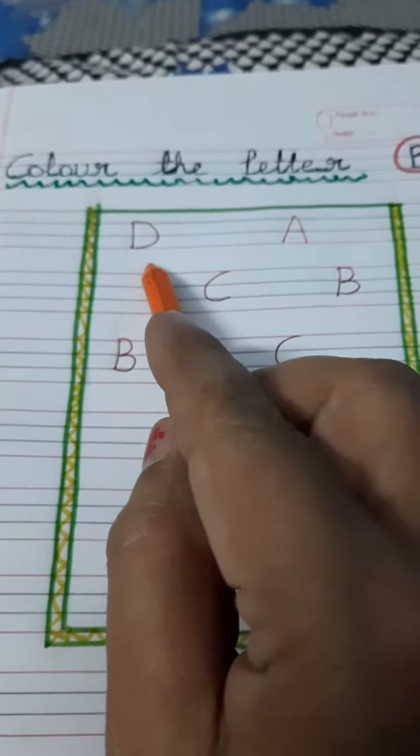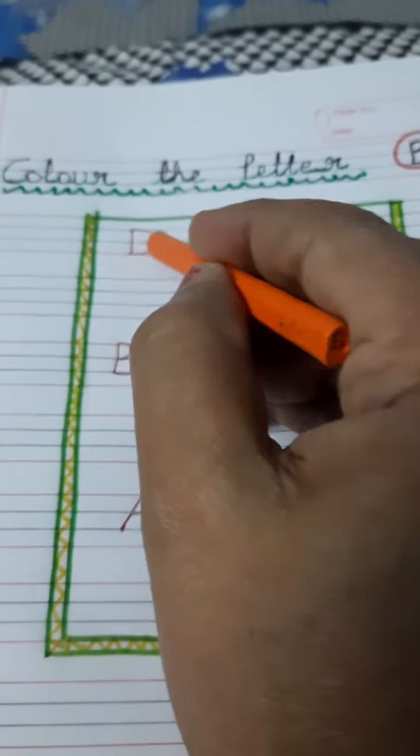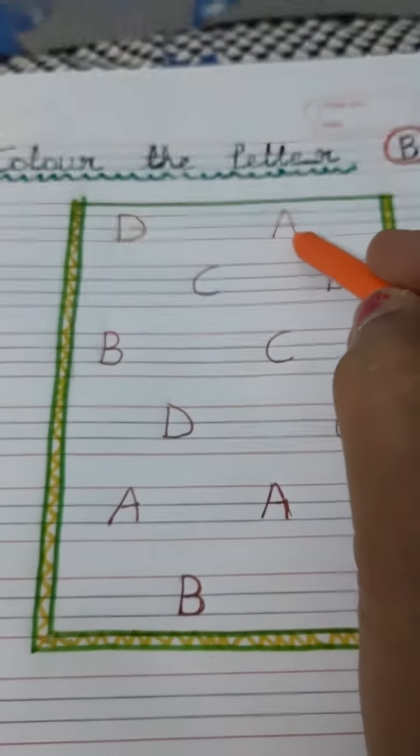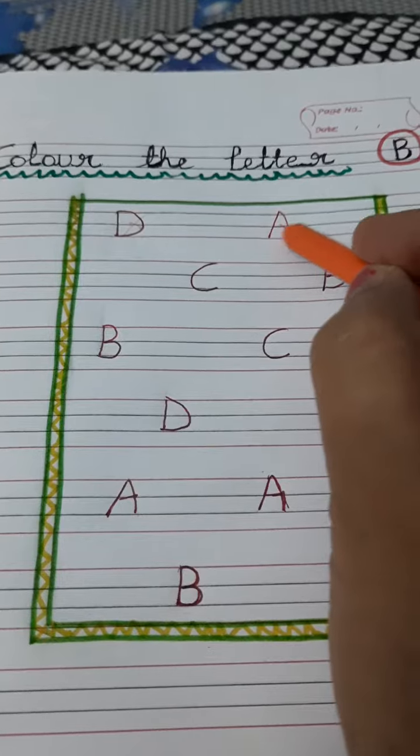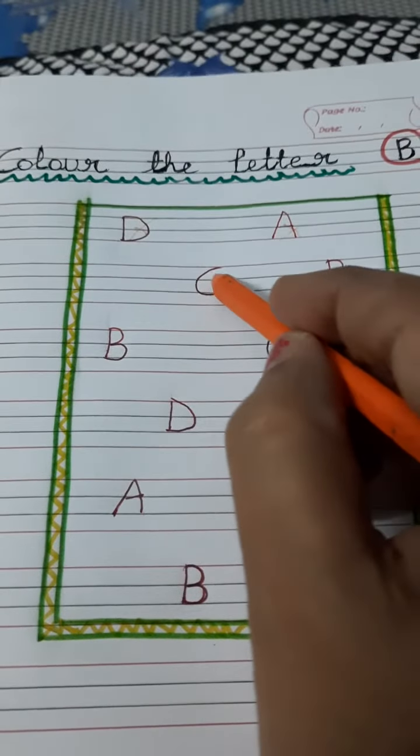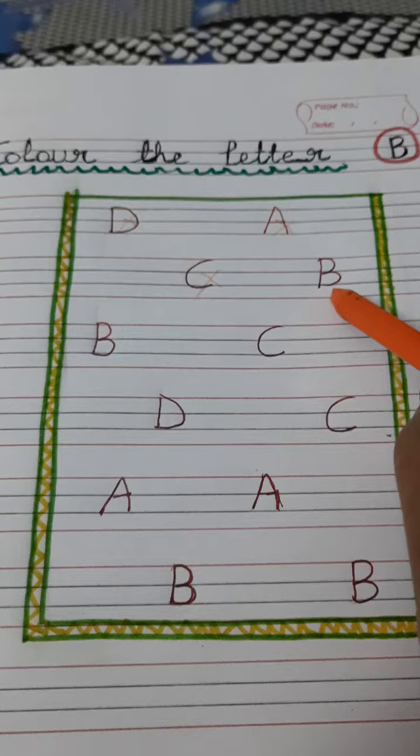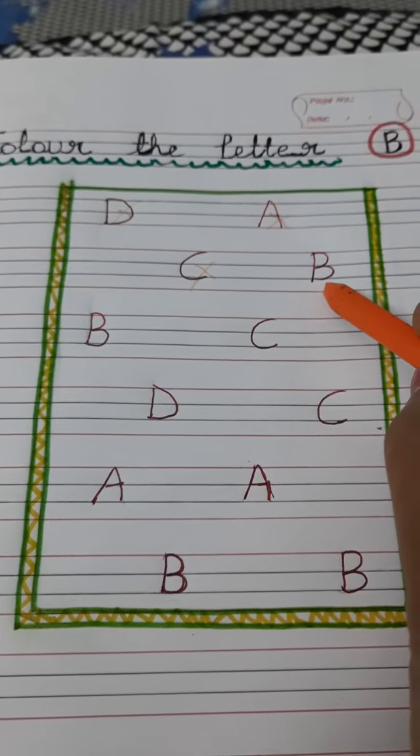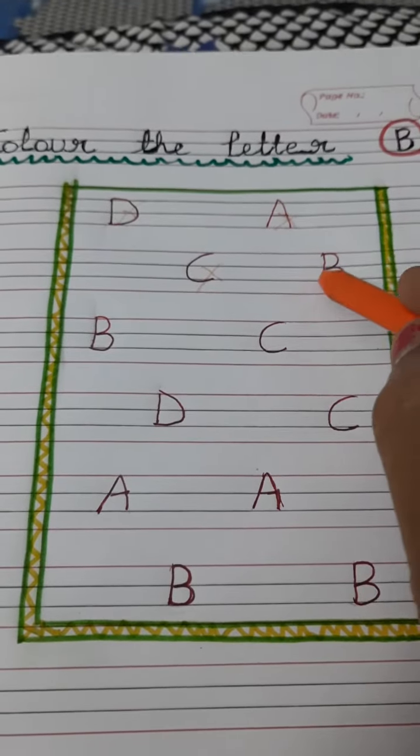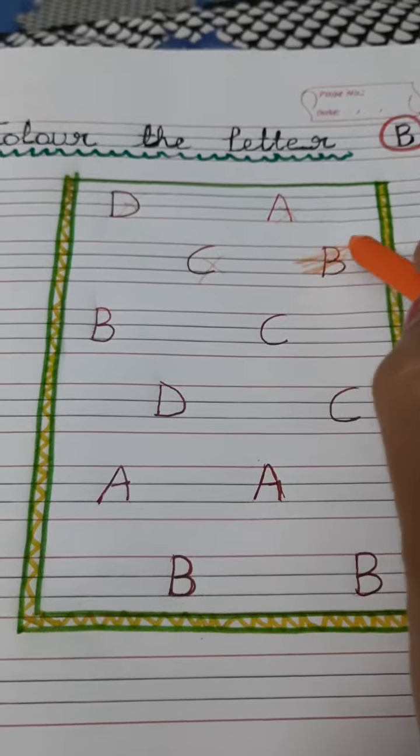Capital D, no. Capital A, no. Capital C, no. Capital B, yes! This is capital letter B. So we have to color this letter.